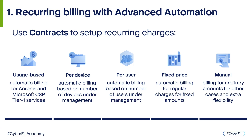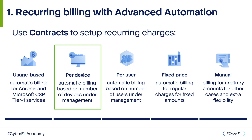The following billing models are typically used by MSPs. Let's discuss them before we continue the demo. Usage-Based Billing allows you to bill clients based on service usage that changes dynamically. With Advanced Automation you can use usage-based billing for Acronis services and Microsoft CSP Tier 1 services.